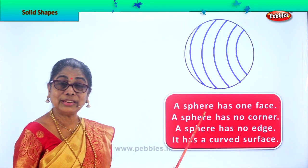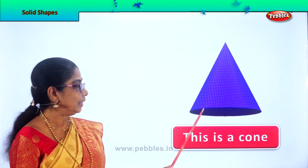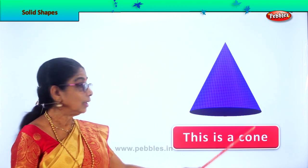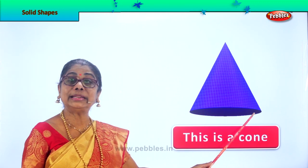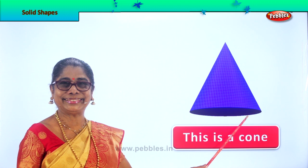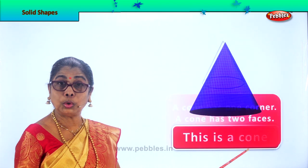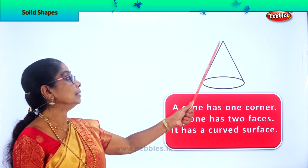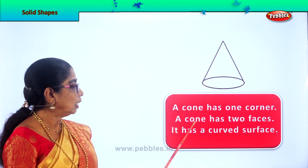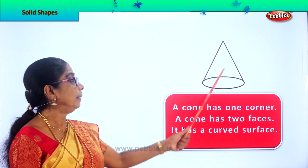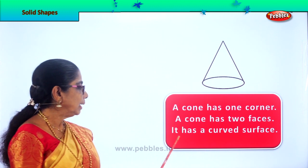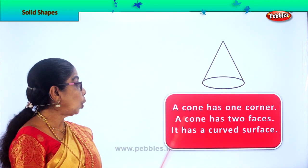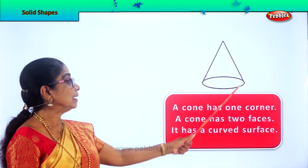Shall we take another solid figure? This is a cone. Look, it's almost like a party cap, but it is solid — you can't put it onto your head. Now let's learn about the cone. A cone has one corner. A cone has two faces — one and two. It has a curved surface. A cone has one corner, two faces, and a curved surface.